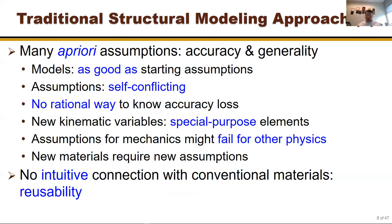If you take the plane stress assumption, you will not get the transverse shear stress or transverse normal stress because you assumed them zero from the start. Sometimes the assumptions are self-conflicting — for example, Classical Lamination Theory uses Kirchhoff's assumption (plane strain) and then takes the plane stress assumption. Plane strain and plane stress do not co-exist; they are only compatible for isotropic materials when Poisson's ratio equals zero.